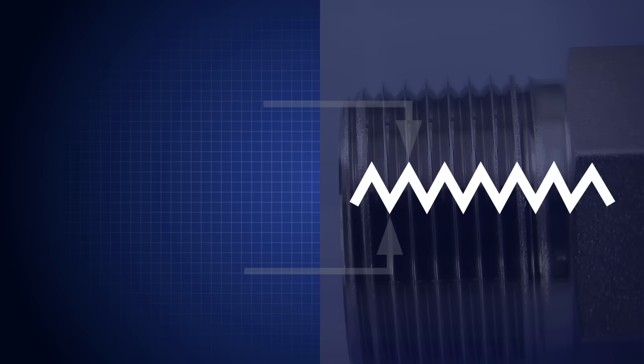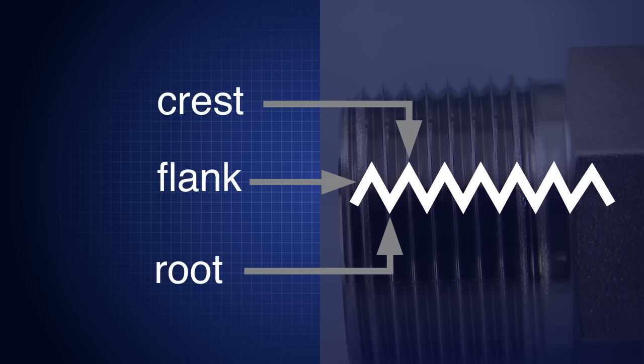Threads have peaks and valleys, referred to as crests and roots. The surface between the crest and the root is called a flank.